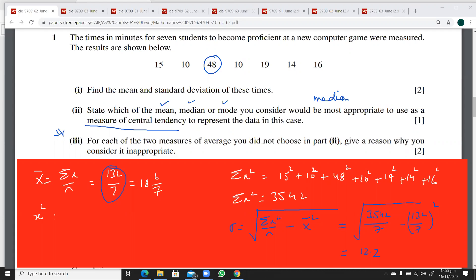For each of the two measures of average you did not choose, give a reason why you consider it inappropriate. I will not be using the mean because this is a very big value. Do you know what the impact of this value on the mean is? The mean will increase, giving you a bigger mean that will not give a true picture of this data.